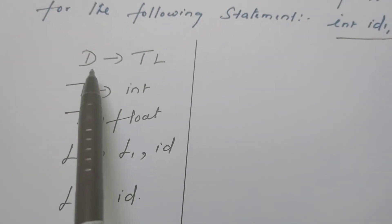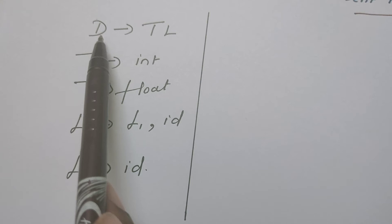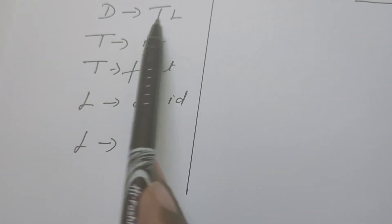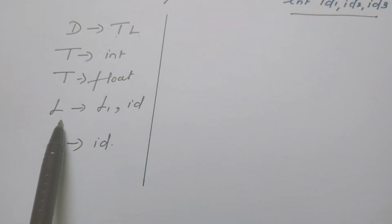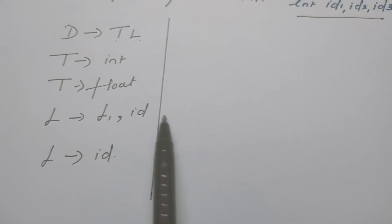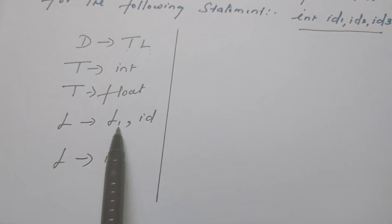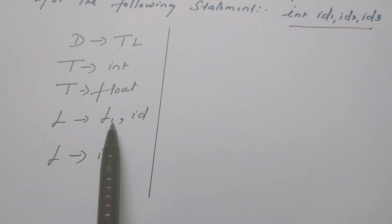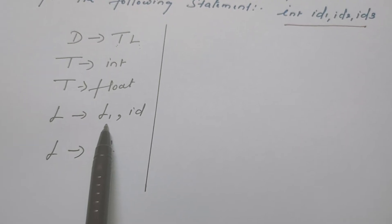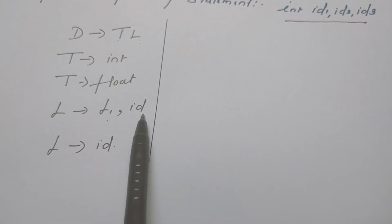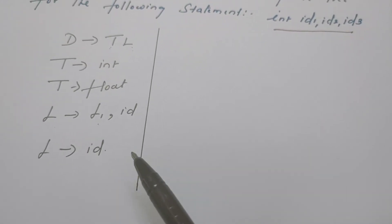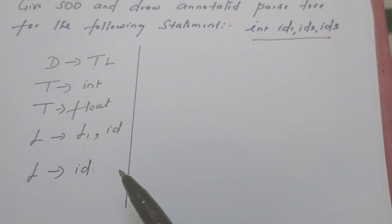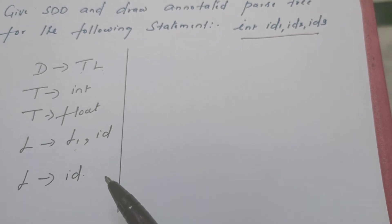The grammar is: D is the start symbol, defined by two variables T and L, where T is the data type — it can be either integer or float. L is nothing but a list of identifiers. L1 (subscripted to differentiate) is defined as L1 comma ID. And finally, L can be replaced by ID. Sometimes the grammar may or may not be given in the question paper, so it is better to remember the grammar also.